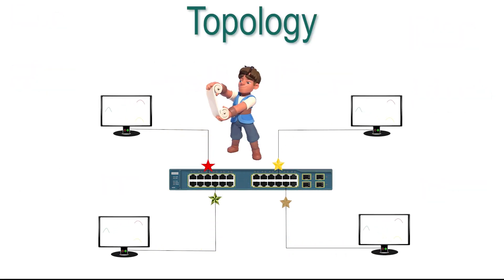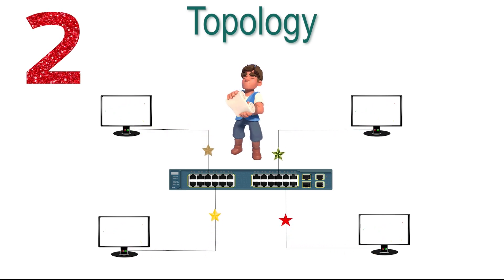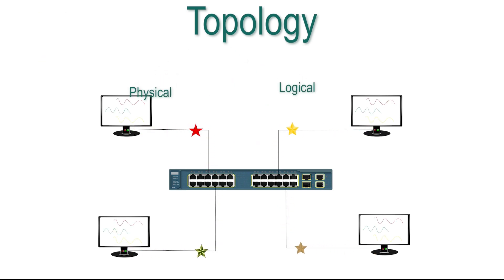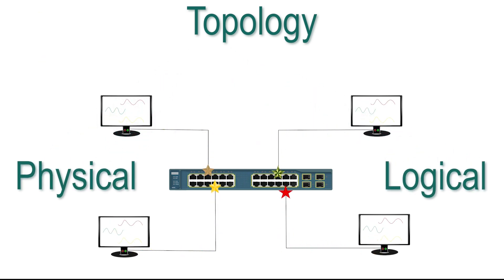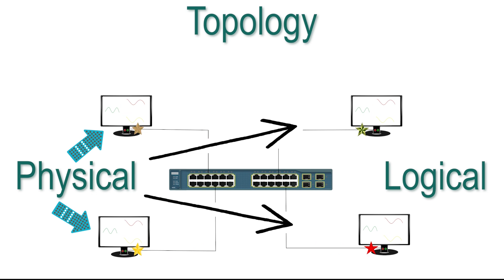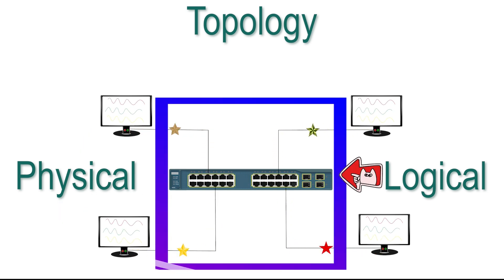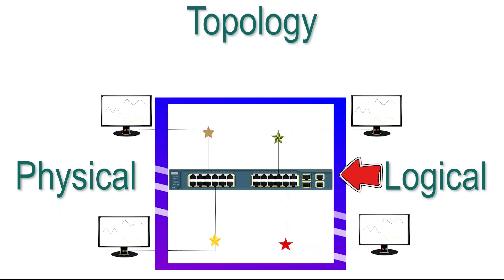A topology is a layout of a computer network. There are two types of topology: physical and logical. A physical topology defines how devices on the network are connected. A logical topology describes how data flows over the physical topology.